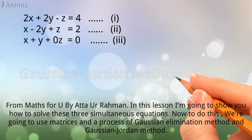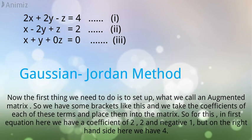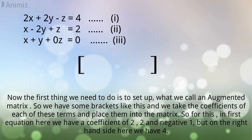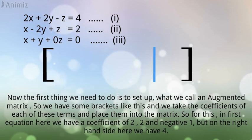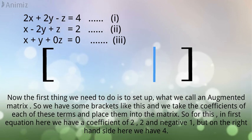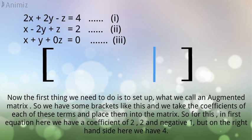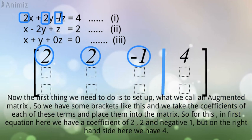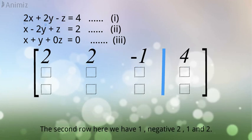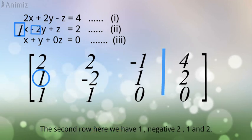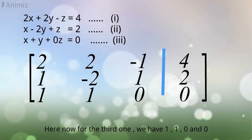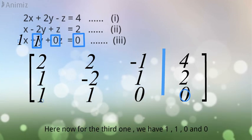Now the first thing we need to do is to set up what we call an Augmented Matrix. So we have some brackets like this and we take the coefficients of each of these terms and place them into the matrix. So for this, in first equation here we have a coefficient of 2, 2 and negative 1, but on the right hand side here we have 4. The second row here we have 1, negative 2, 1, and 2. Here now for the third one, we have 1, 1, 0, and 0.